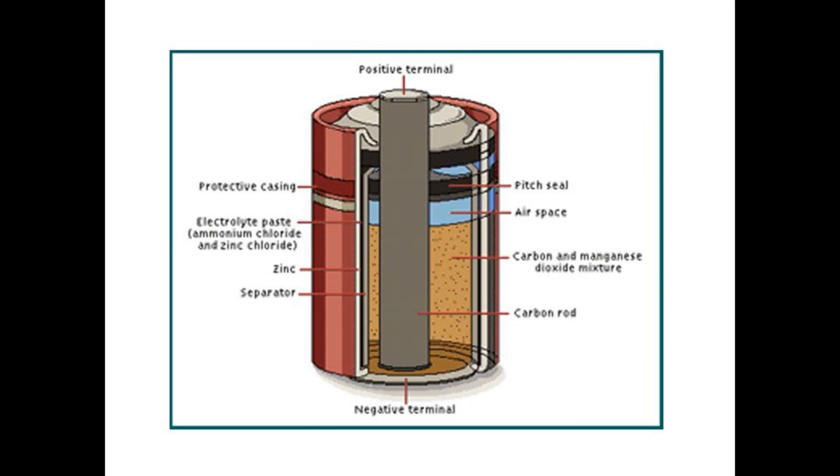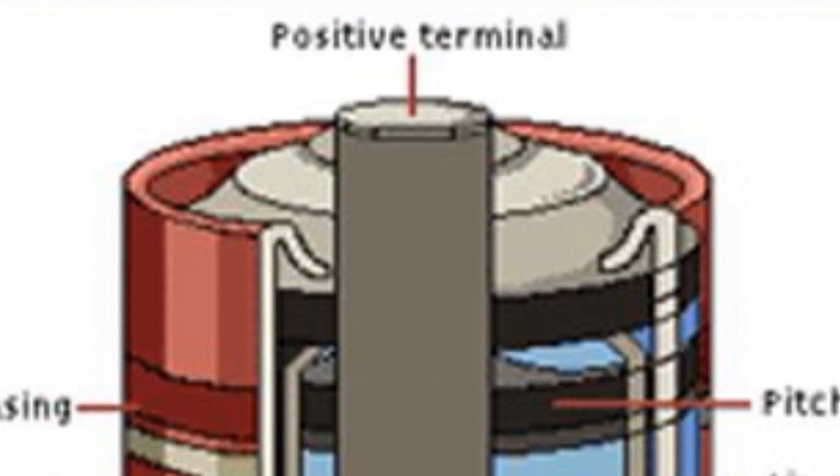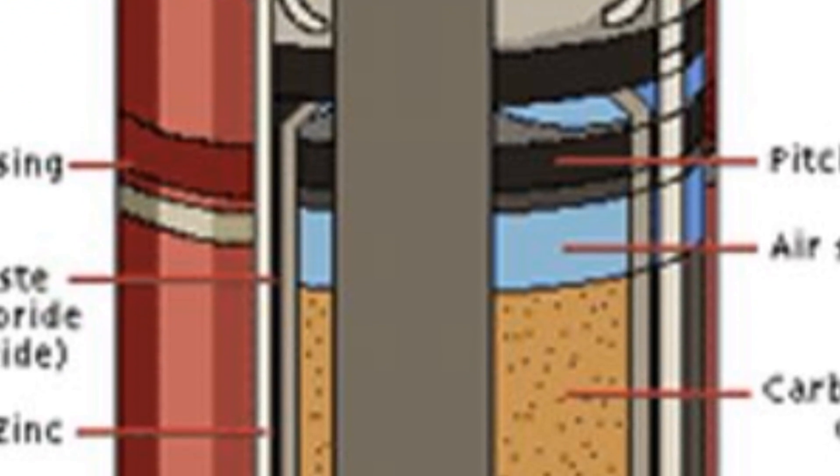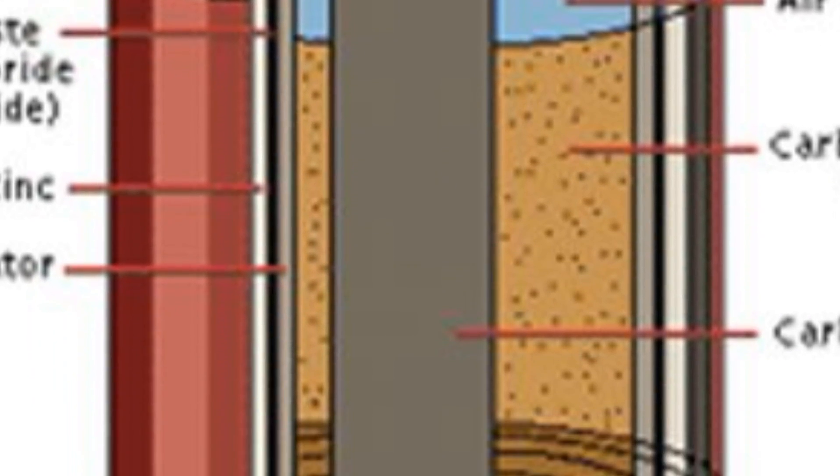Let us first go over parts of a battery. There is a positive terminal on the top of the battery and a negative terminal on the bottom of the battery.